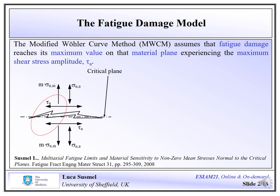Fatigue damage is also influenced by the mean stress perpendicular to the critical plane. This mean stress favors the crack propagation process when it opens the crack, whereas a compressive mean normal stress slows down the crack propagation process due to friction between the faces of the microcracks. Here we also have a constant M, called the mean stress sensitivity index, which is a material property determined by running appropriate experiments and seen to be different for different materials.